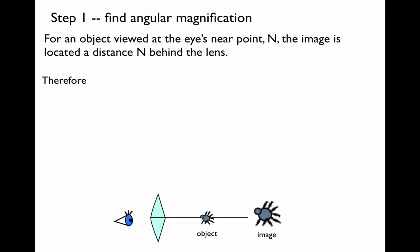So therefore, the distance to the image is negative N. Recall that it's negative because it's located on the same side of the lens as the object.